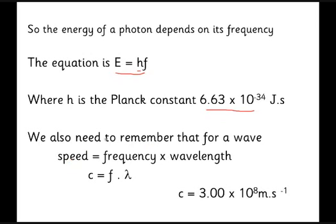And remember that despite the fact we're talking about the particle nature of light, we still need to remember the wave equation to work out what this frequency is. And that comes from the equation speed equals frequency times wavelength, where we've got the speed being the speed of light, c = 3 times 10 to the 8 metres per second.